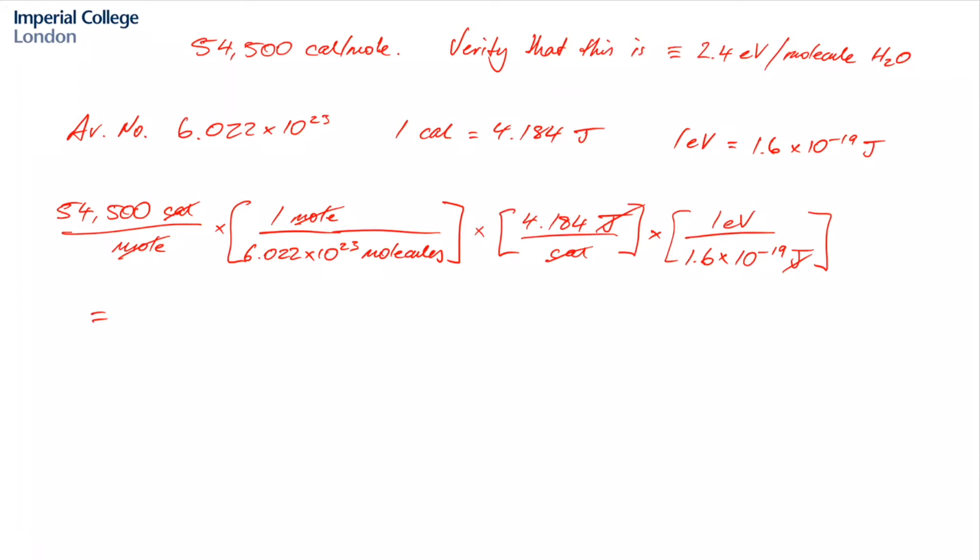or put it into a spreadsheet, which is what I did, we end up with a value of 2.36 electron volts per molecule. And if you round that to one decimal place, you have our original value here, which is 2.4 EV per molecule of water. So that's it for question 1.